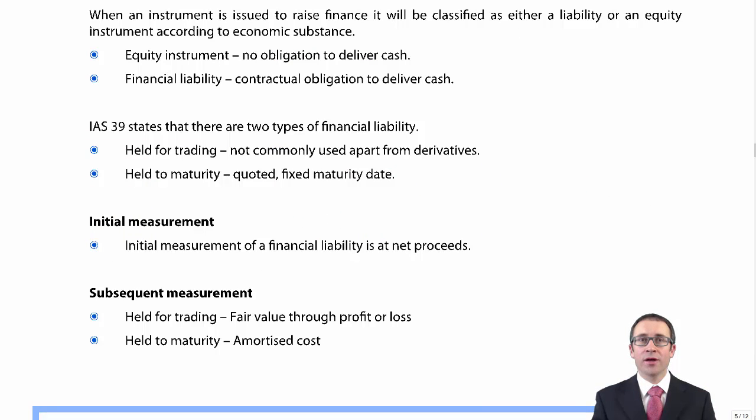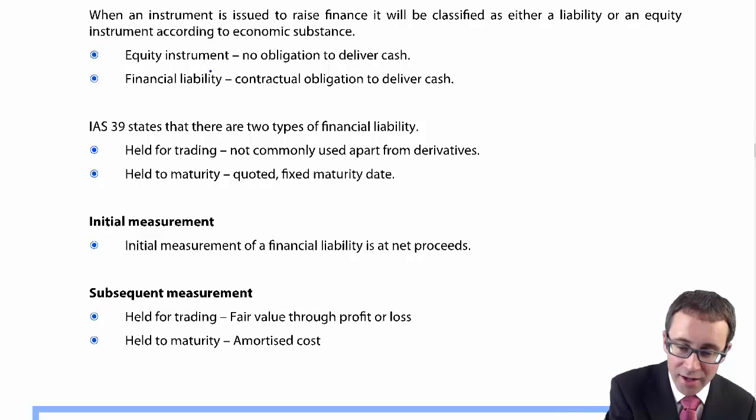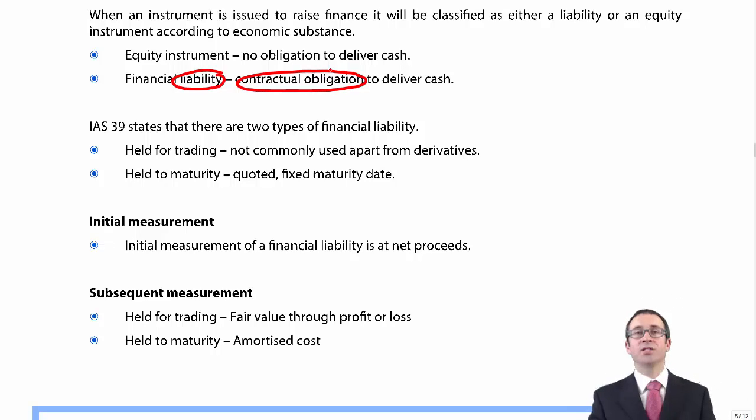We're going to look at the accounting treatment of financial liabilities. Having covered everything to do with financial assets, you'll be glad to know that financial liabilities follow on. Financial liabilities arise when you're looking to raise finance via debt finance, so you have a contractual obligation to deliver cash.